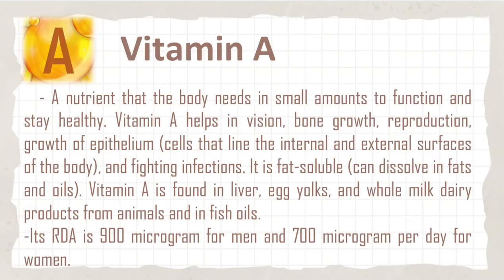Next is vitamin A. Vitamin A is a nutrient that the body needs in small amounts to function and stay healthy. Vitamin A helps in vision, bone growth, reproduction, growth of epithelium — cells that line the internal and external surfaces of the body — and fighting infections. It is fat-soluble and can dissolve in fats and oils. Vitamin A is found in liver, egg yolks, and whole milk dairy products from animals, and in fish oils. Its RDA is 900 micrograms for men and 700 micrograms per day for women.